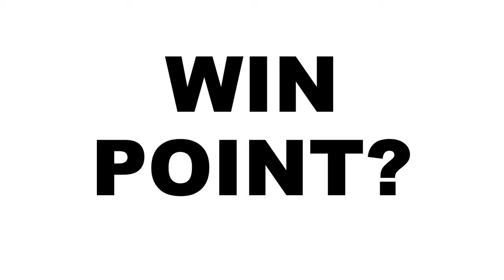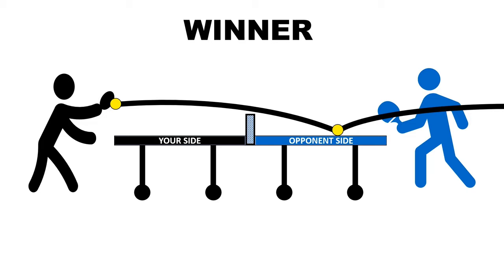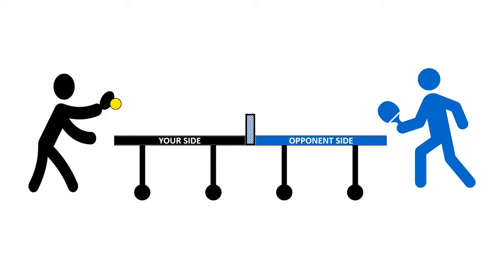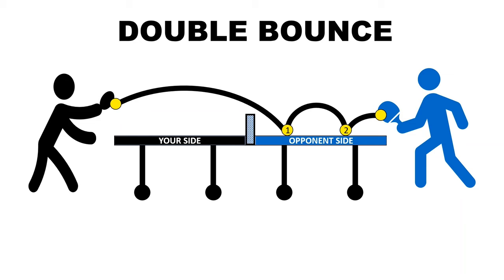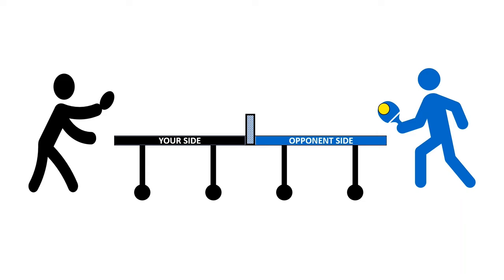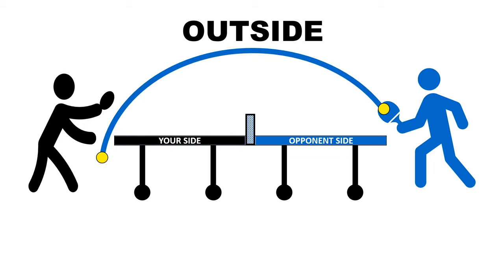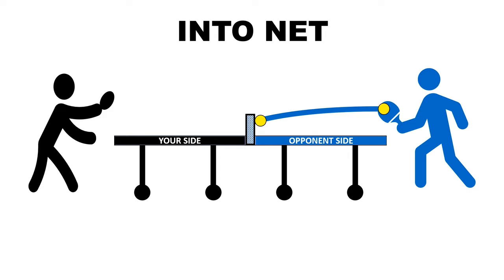You can win a point in several ways: hitting a very fast shot your opponent can't reach (a winner), or your opponent letting the ball bounce twice on the table (double bounce). You also win if your opponent hits the ball outside the table, or hits it into the net.